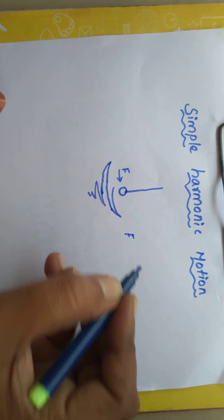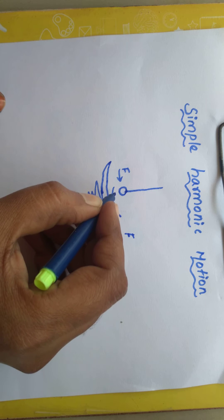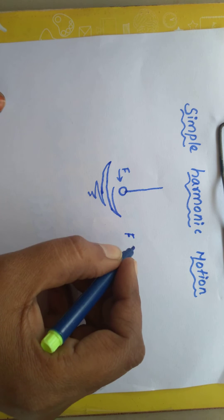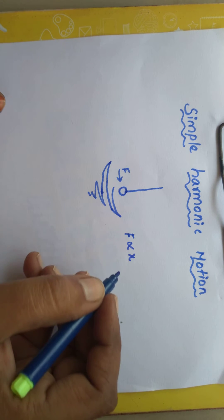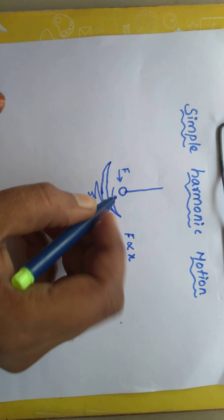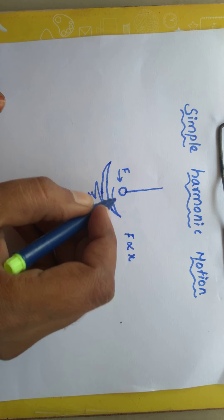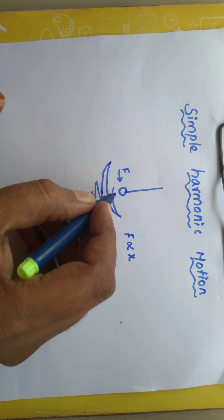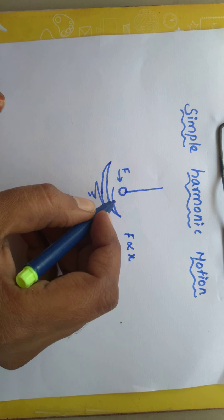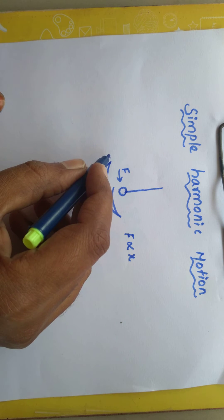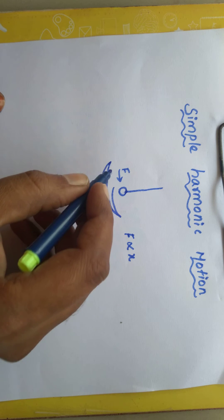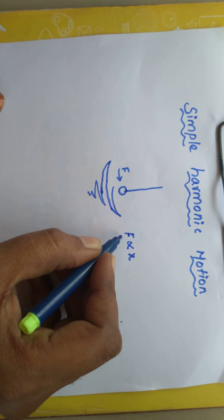When a force F is applied, the bob is oscillating and displacing. The force is directly proportional to displacement x. I am using displacement rather than distance because displacement depends on direction — it goes in one direction, comes back to the equilibrium position, and again goes to another maximum position and returns. Distance does not depend on direction, but displacement does.